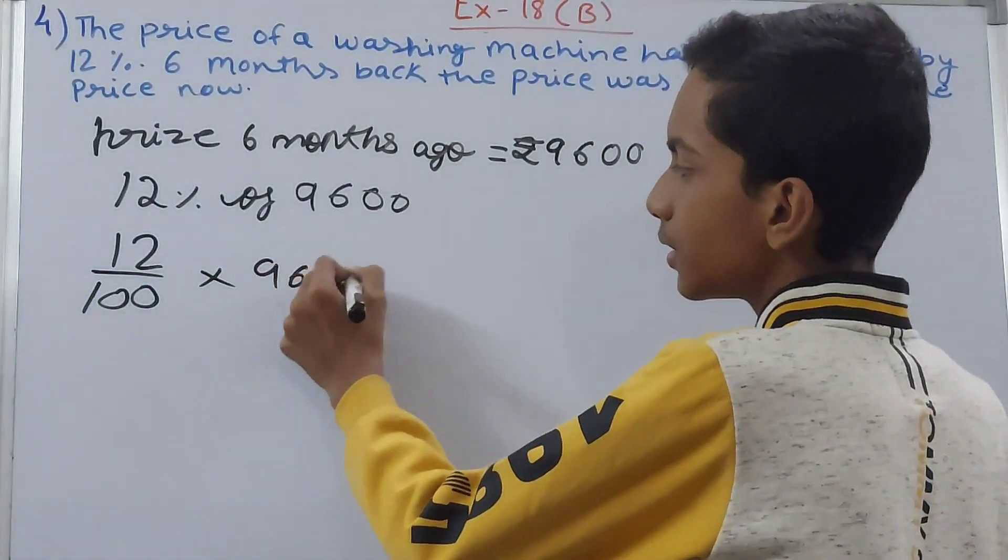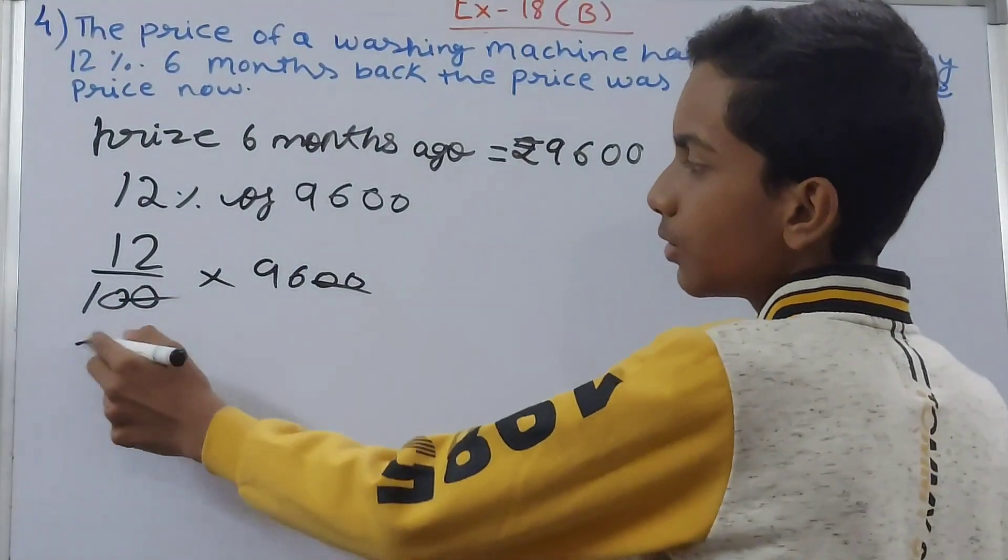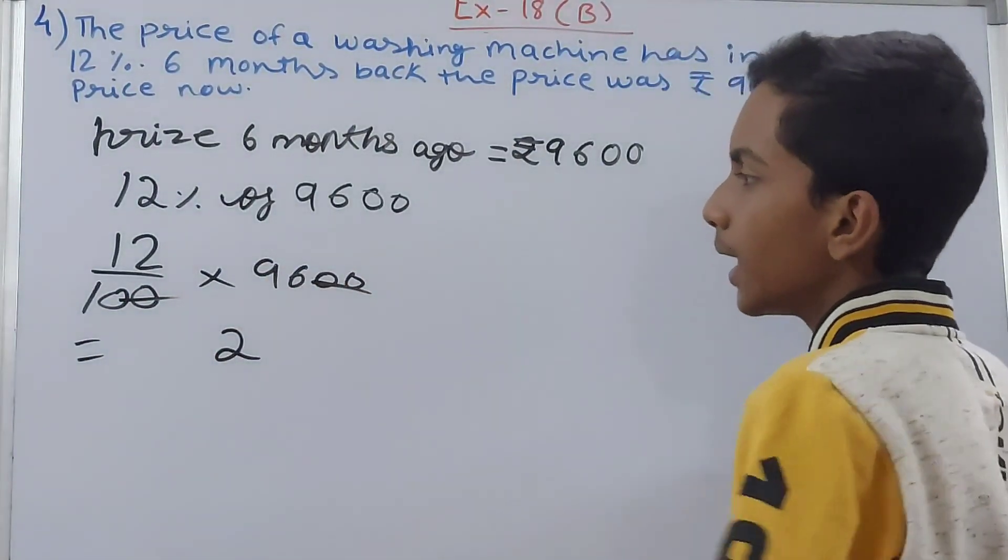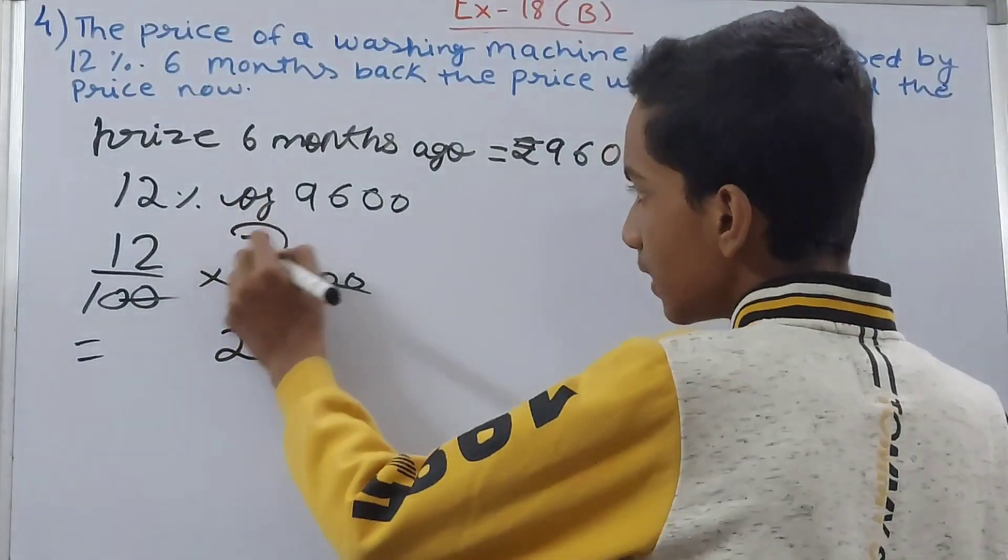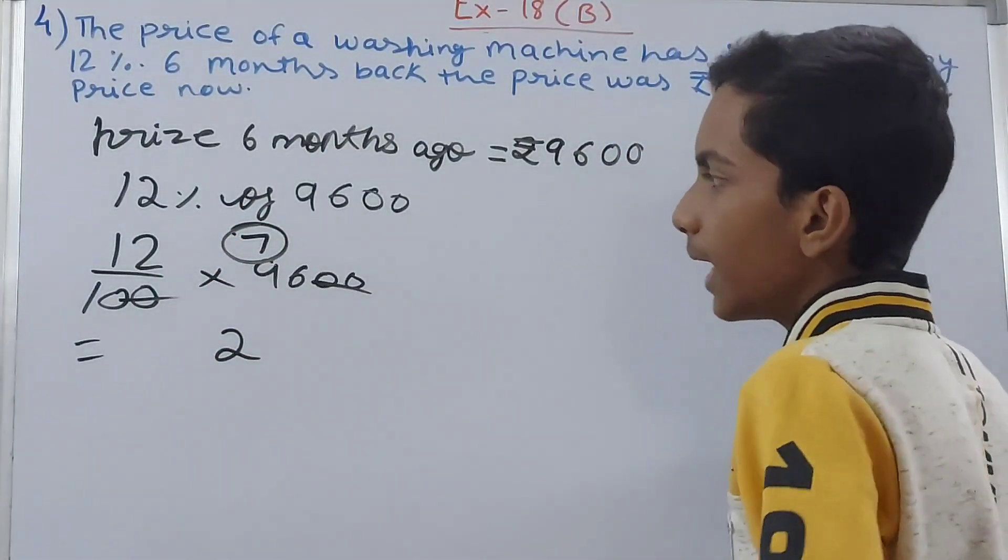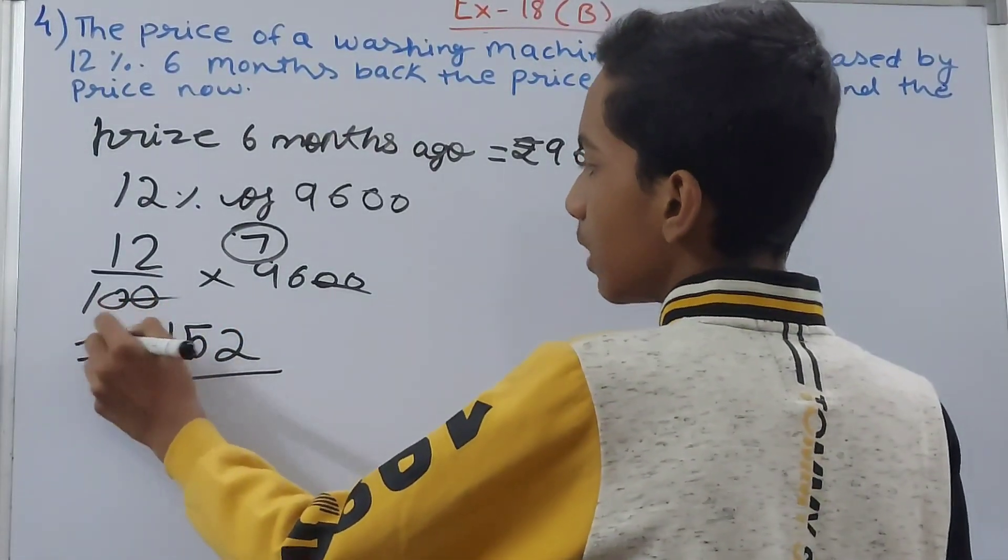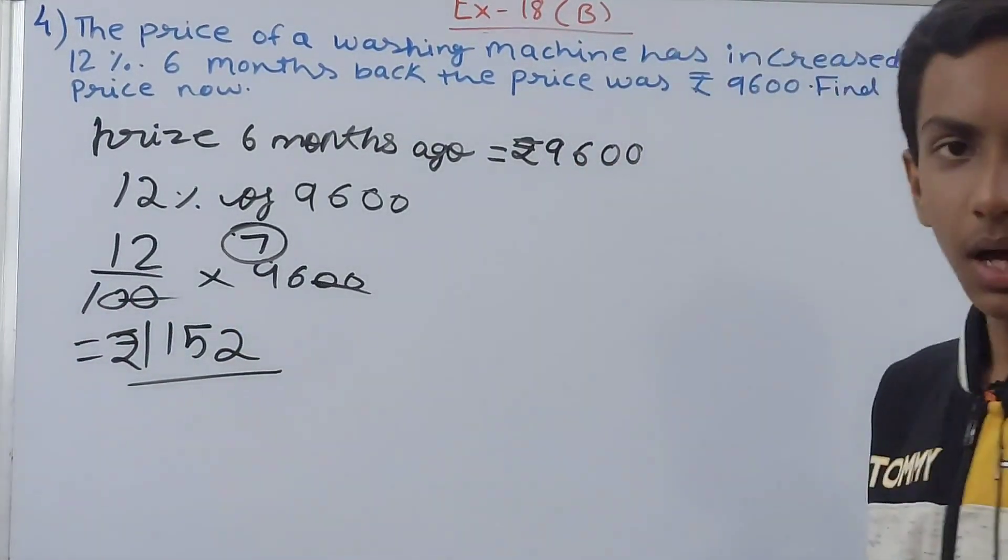Cut this, cut this. So we get here 12, 6 are 2 and 7, so 108. And 12 nines are 108, and 7, that is going to be 1152. So ₹1152. Now this much was the money that was increased in the span of six months.